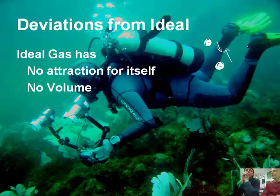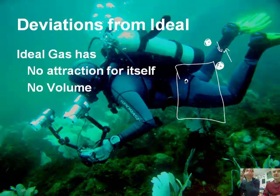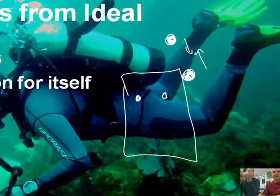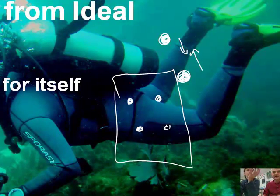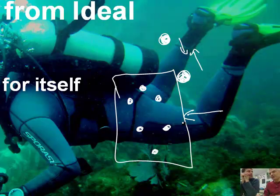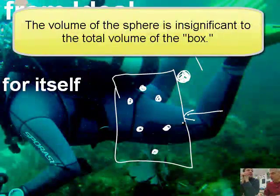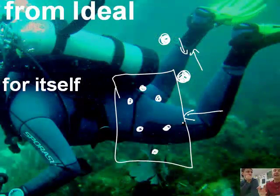Second, ideal gas molecules take up no space. We assume that the gas particles are so tiny that the space they occupy is insignificant compared to the space in between all of the molecules. The actual volume of a gas molecule is considered to be zero for an ideal gas — or effectively zero.